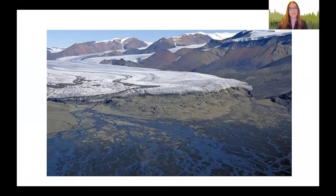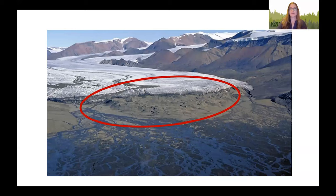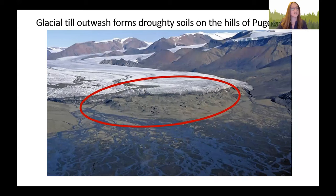This picture shows a glacier in Canada moving across the landscape. As it moves, it pushes soil out in front of it. The soil that's been scored out and pushed along as the glacier moves — the area in the red circle — is called the glacial outwash. This outwash is very well drained and has a tendency to be droughty in the summer. This material makes up the majority of the hills around Puget Sound and is left over from previous glaciation.